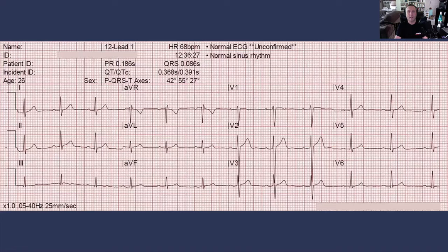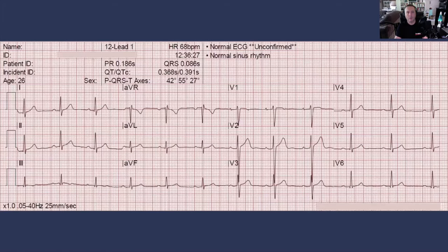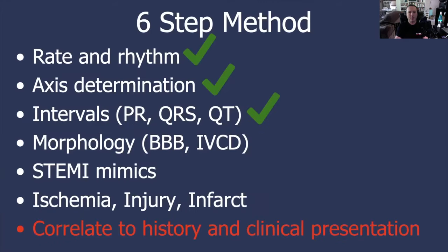Getting back to the ECG: we've looked at rate and rhythm — sinus rhythm, rate of 68. We've got a normal axis, we like the precordial leads and R-wave progression, and our intervals all appear normal. So let's give ourselves another check mark and move on to morphology.